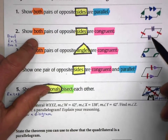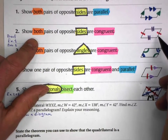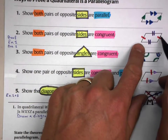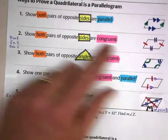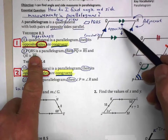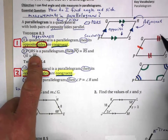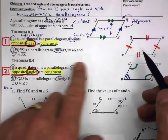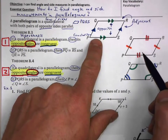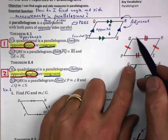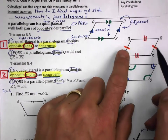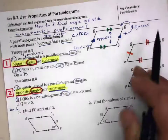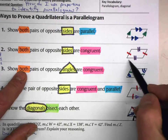A second way to prove that a quadrilateral is a parallelogram is when both pairs of opposite sides are congruent. That's exactly the same thing we just said — that if it is a parallelogram, then both pairs of opposite sides are congruent. I did say the converse of this is also true. So if you're looking at a quadrilateral and both pairs of opposite sides are congruent, then you know it is a parallelogram.